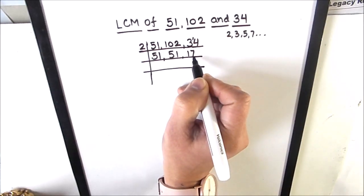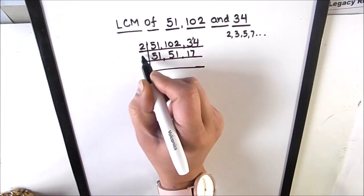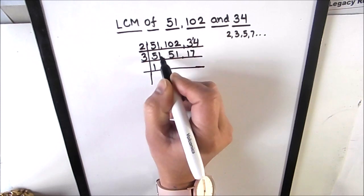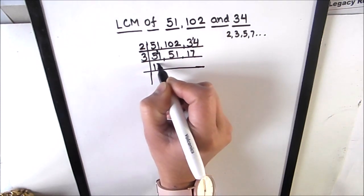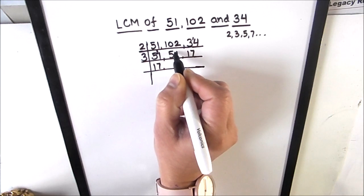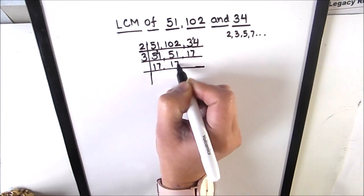Let's divide 51 by number 3. 3 times 17 is 51. Again 3 times 17 is 51.